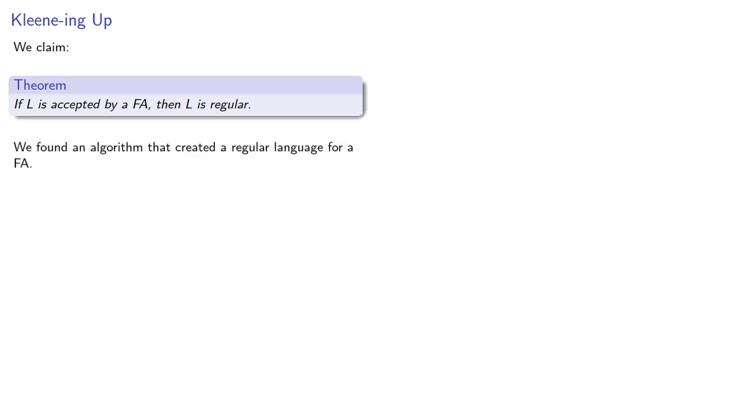So now we'll prove the second half of Kleene's Theorem. If a language is accepted by a finite automaton, then the language is regular. We found an algorithm that created a regular language for a finite automaton, and it's useful to remember every algorithm generates a proof.